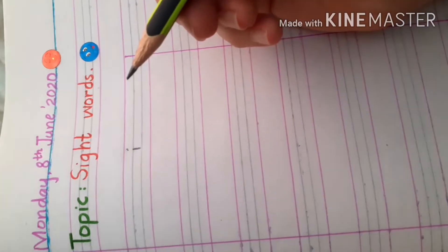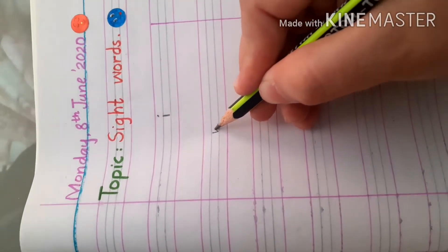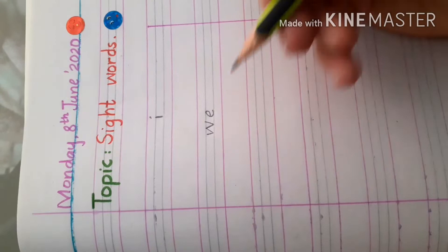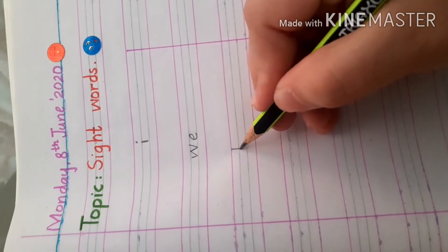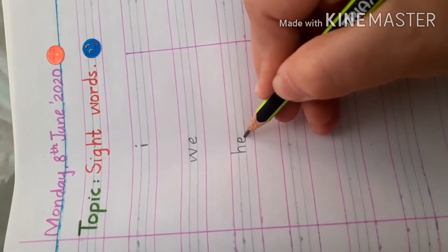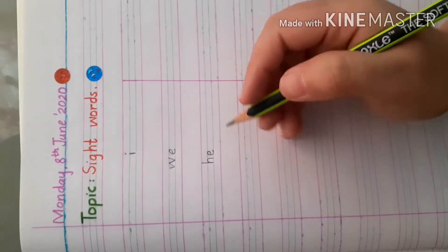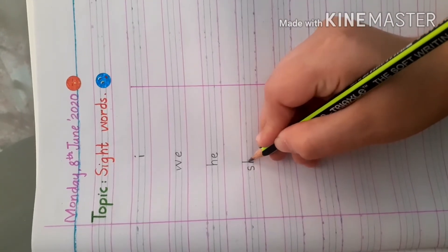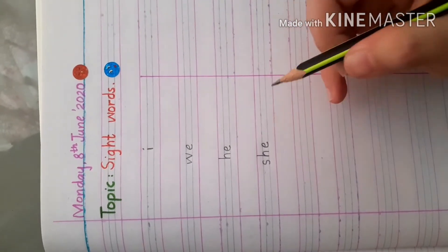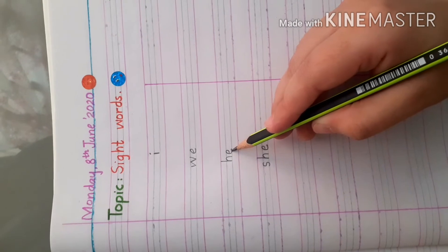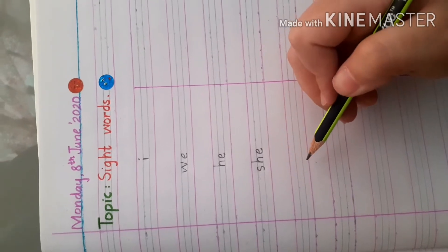Okay, the first sight word is I. I, I, I. Next is W-E, we, we. Next sight word is H-E, he. Next sight word is S-H-E, she. Remember one thing, he is used for boy and she is used for girl.